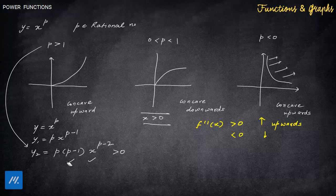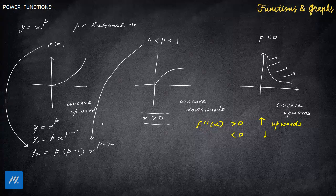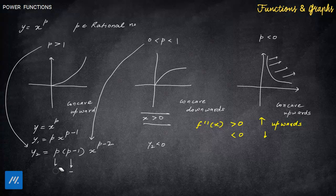The derivative formula stays the same for all three cases. When p lies between 0 and 1, the term (p−1) becomes negative, so y₂ comes out less than 0 for x greater than 0 — that's why the shape is concave downward. For p less than 0: both p and (p−1) are negative, but negative times negative is positive, and x^(p−2) is positive for x>0, so y₂ is again positive and the graph is concave upward.